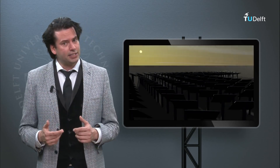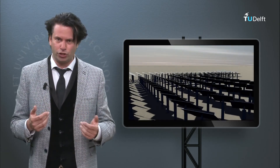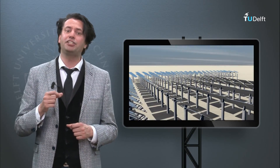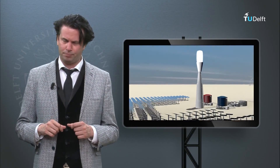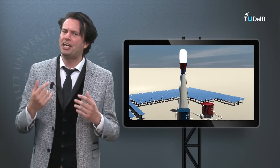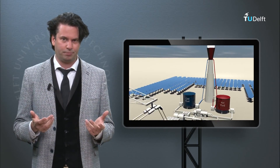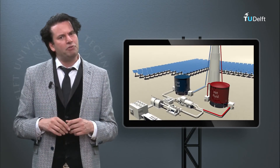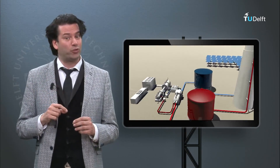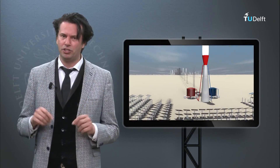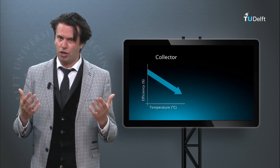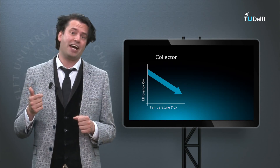In week 6 the future generation concepts are discussed, which are supposed to beat the Shockley-Queisser efficiency limit of a single junction solar cell. Secondly, I will introduce you to solar heat and concentrated solar power technology. Finally, we will talk about solar fuel technology, and photo-electrochemical approaches will be discussed. After week 6 we will have the second exam moment, covering weeks 4, 5 and 6.